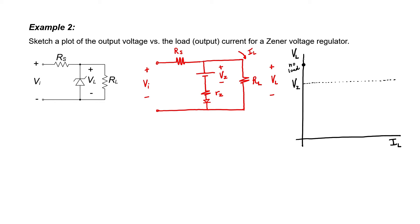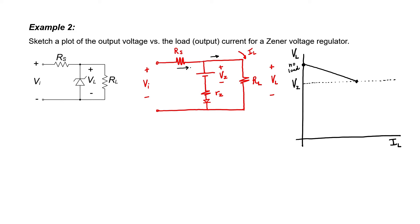Let's start at the no-load condition — no current is going to flow through the load, which would be the situation when the load resistor is very, very high. At the no-load condition, all of the current that enters the regulator has to pass through the Zener diode. The voltage at the no-load condition is a little bit higher than the Zener diode's breakdown voltage because of the resistance R sub Z — there will be a little bit of voltage drop across that resistor. As we lower R sub L from infinity, more current will start to branch off and not all of it will go through the Zener diode. As the current through the Zener diode drops, the voltage drop across R sub Z gets smaller and smaller, which is why this line slopes downwards. Once the output voltage equals the voltage drop across the Zener diode, the Zener diode's current becomes zero, and the circuit behaves as if the Zener diode is not there at all.